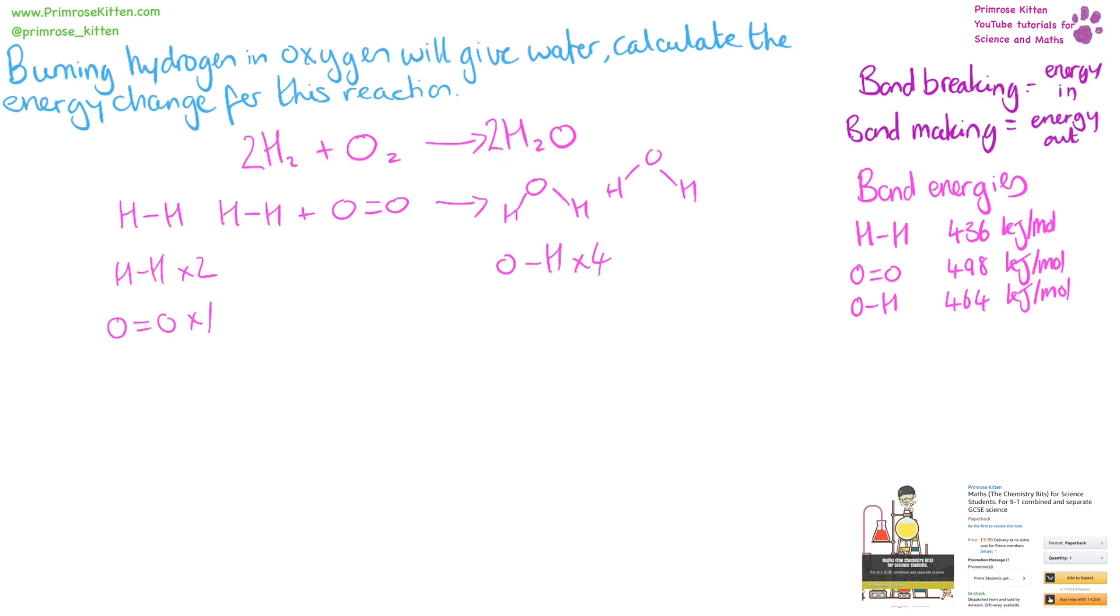Now we need to take that and multiply it by the bond energies. So two bonds for hydrogen, that's two times four three six, one times four nine eight, four times four six four. We can do the maths and work out how much is on each side, adding those up. Eight seven, two plus four nine eight gives us one three seven zero. There's just one eight five six on that side.